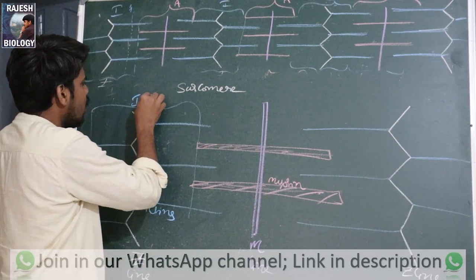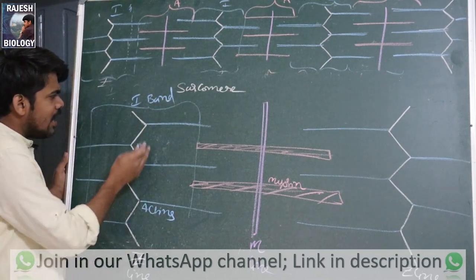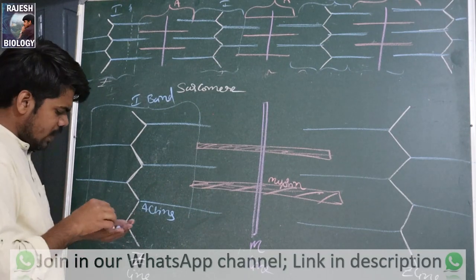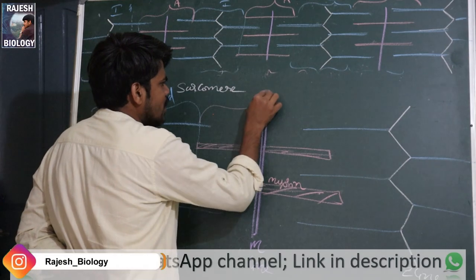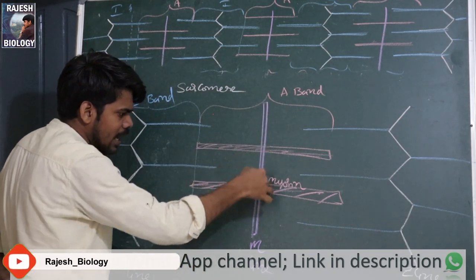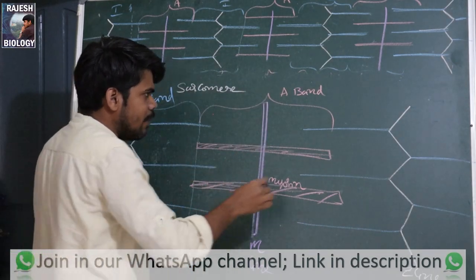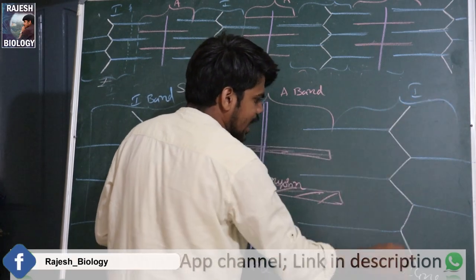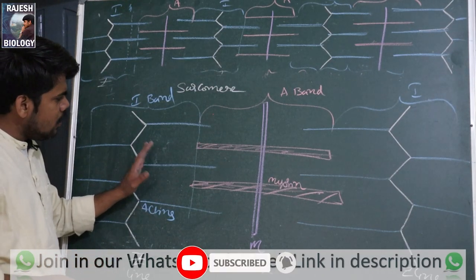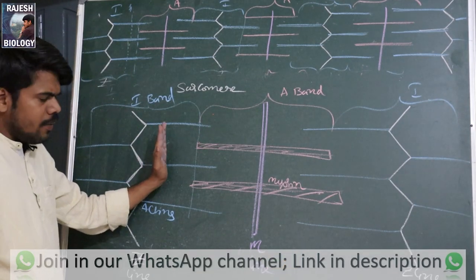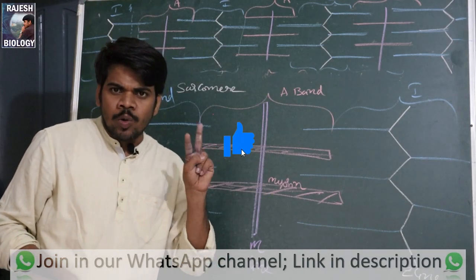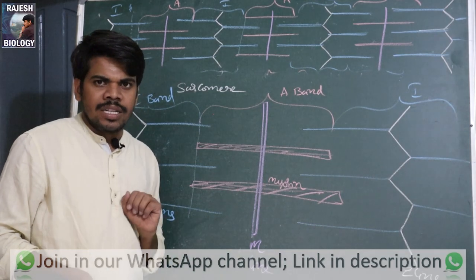Where there is no myosin, that is called the I-band. In the middle of the I-band there is a Z-line. From where to where the myosin extends, that is the A-band. In the middle of the A-band there is the M-line. The sarcomere is made up of: one half of the I-band on one side, one full A-band in the middle, and the remaining half of the I-band on the other side — two half I-bands and one full A-band.